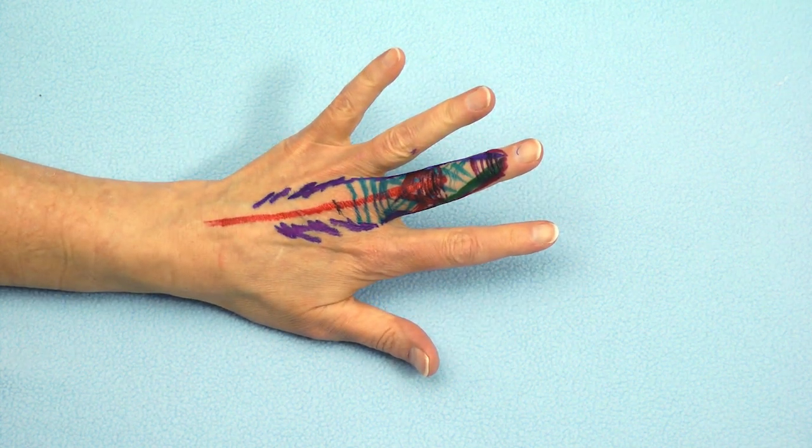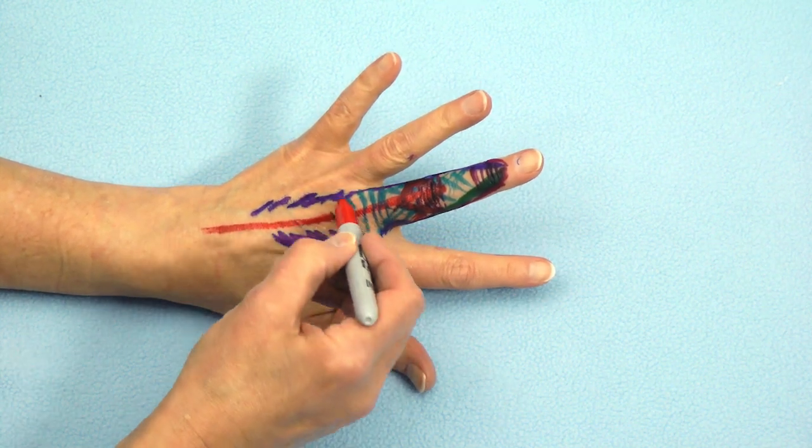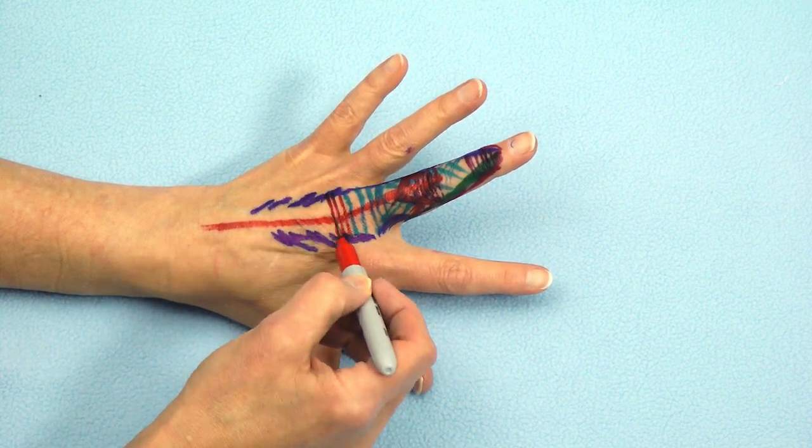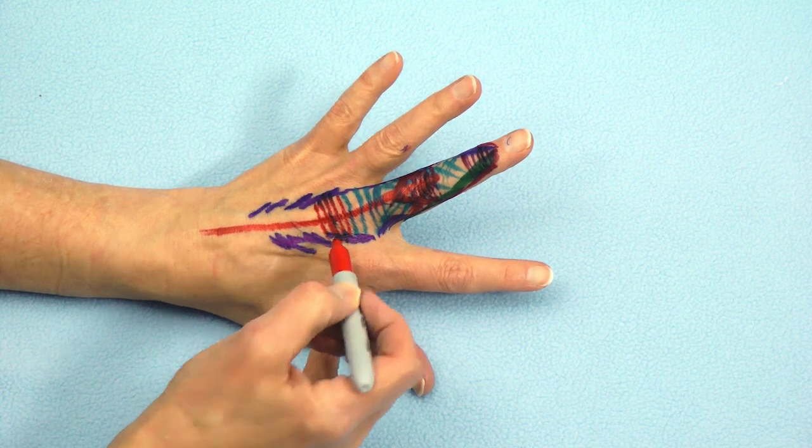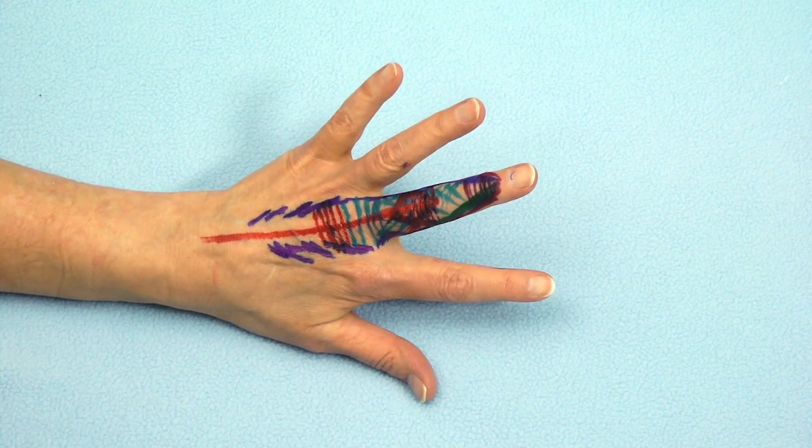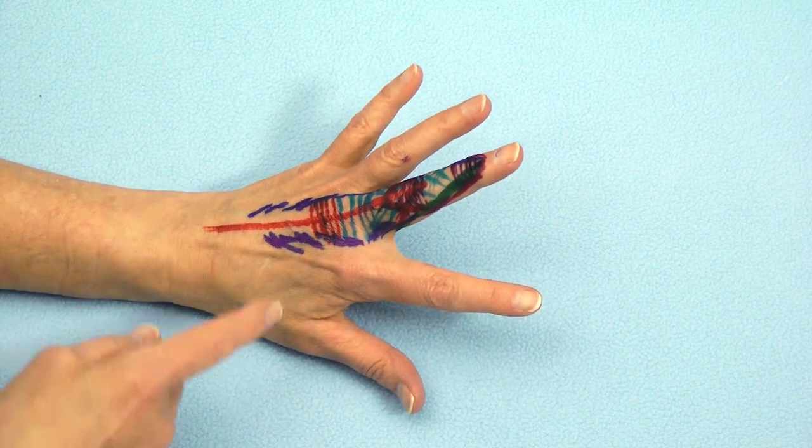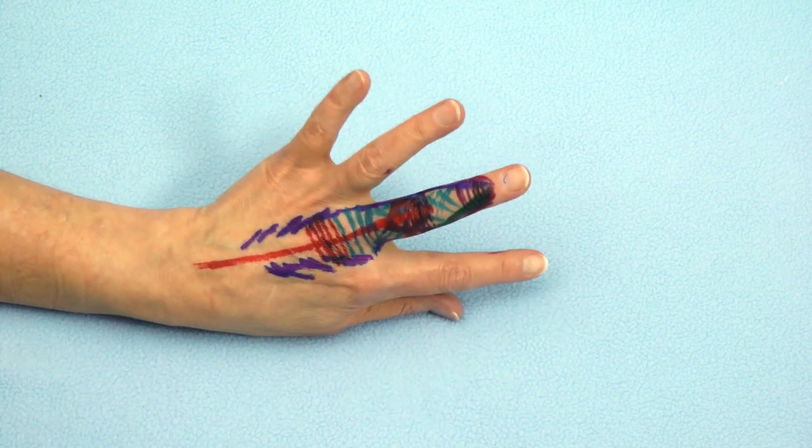The one structure we have not included are the sagittal band fibers that hold the extensor digitorum communis in place over the metacarpal phalangeal joint. They go around the joint and encircle it completely and insert into the volar plate.